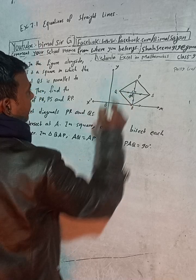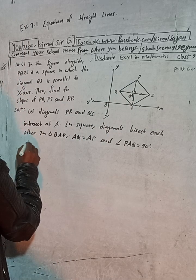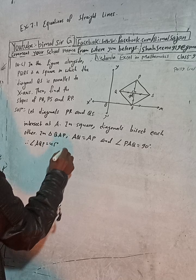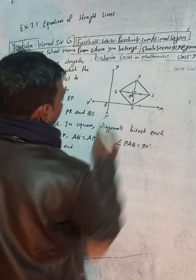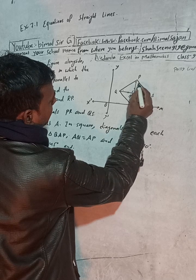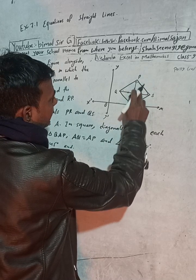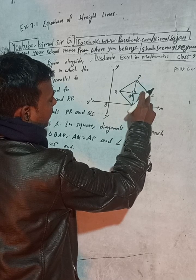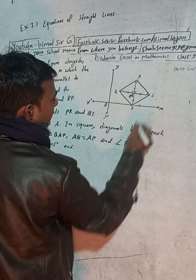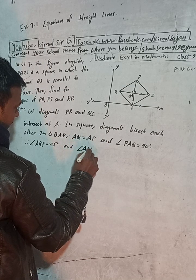Therefore, angle AQP is equal to 45 degrees. Similarly, in triangle ASP, the angle ASP is also 45 degrees, because the sum of angles in a triangle is 180 degrees — with 90 degrees at A and two equal base angles of 45 degrees each.